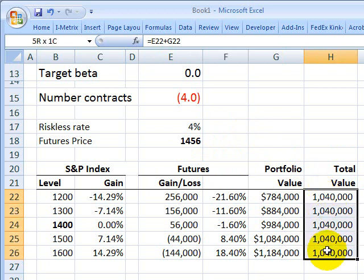You can see, regardless of the scenario I plug in, the total value of the portfolio is $1,040,000. So the perfect hedge does hold up.